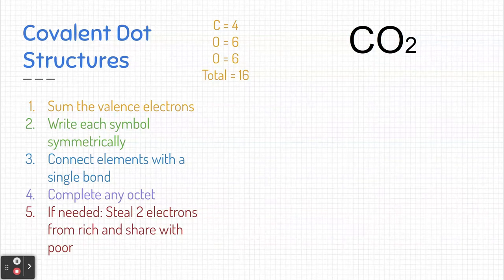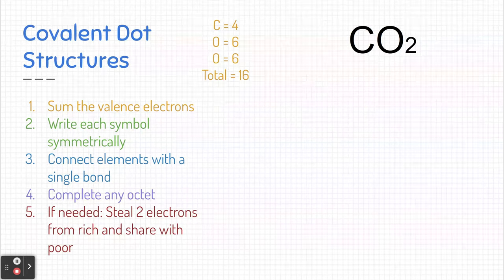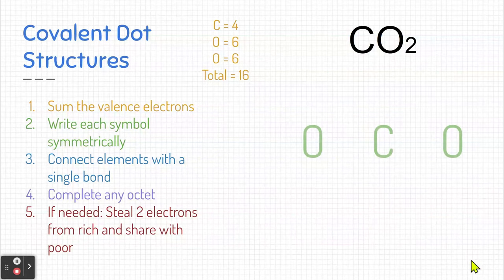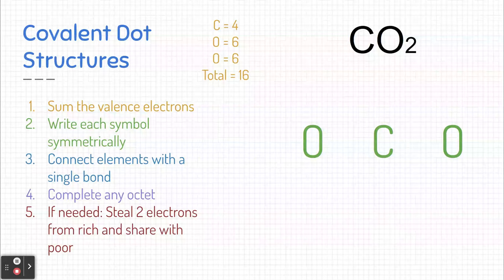These are the electrons that are going to be in my dot structure. I don't have any more than this, and I shouldn't have any less than this either. So step number two, I'm going to take and I'm going to write the symbols out. These are what the electrons are going to go around.